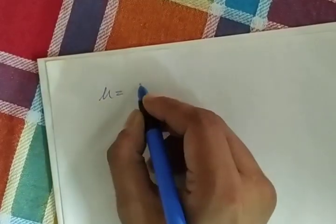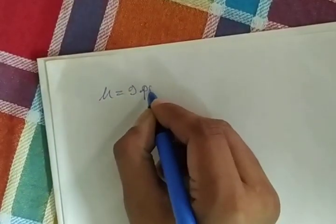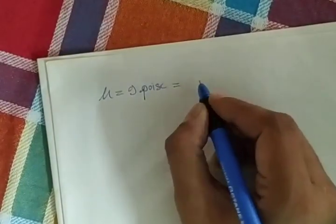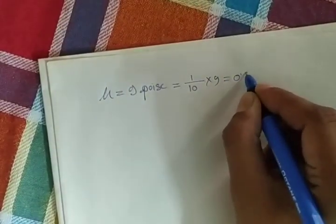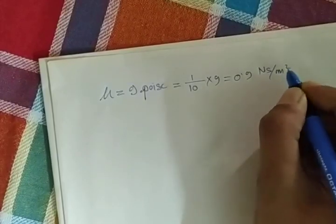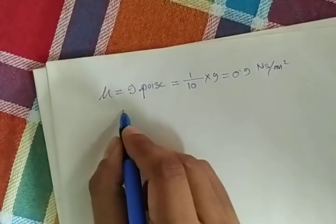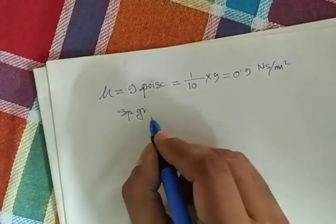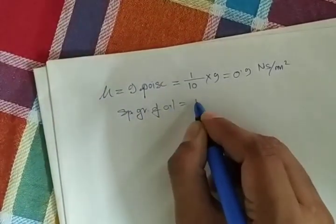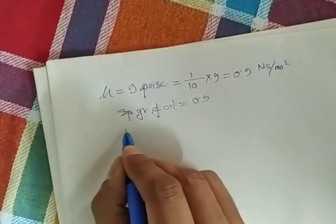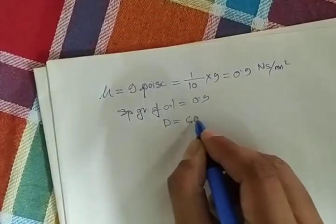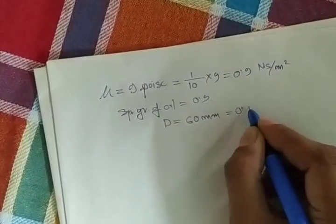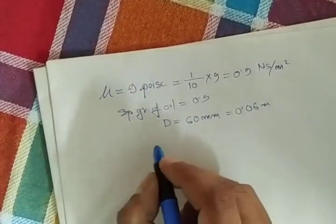The given data are: mu is 9 poise. Let's convert into Newton second per meter square, it will be 0.9 Newton second per meter square. Specific gravity of the oil is 0.9. Diameter of the pipe is 60 mm, so 0.06 meter.